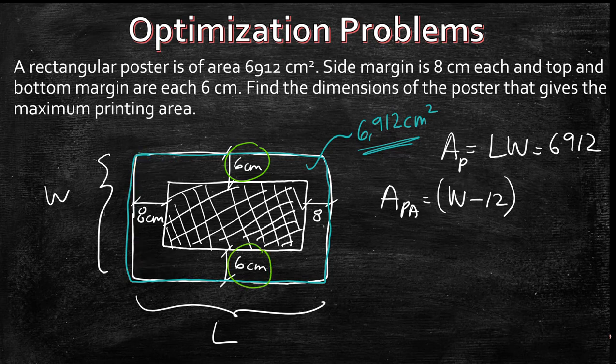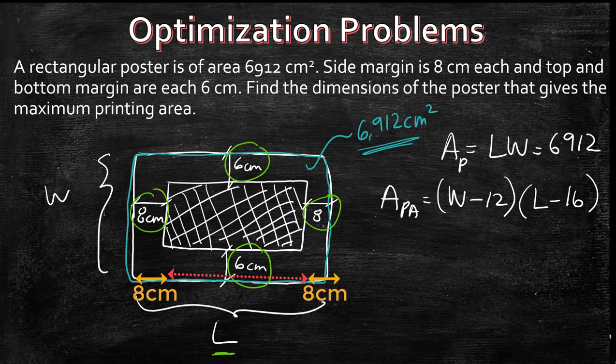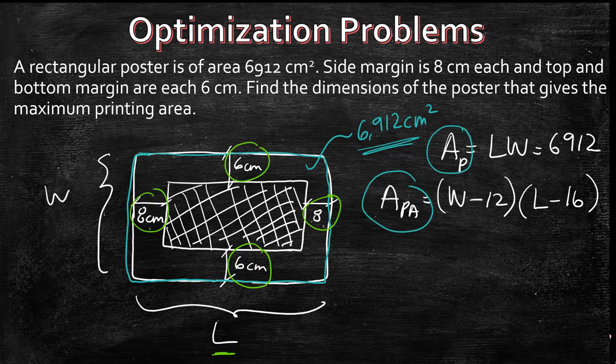Multiplied by L minus 16 because we have 8 and 8 so that entire L over here you're going to have to subtract 2 times 8 from it. So now we have the area of our poster and we have the area of the printing area.